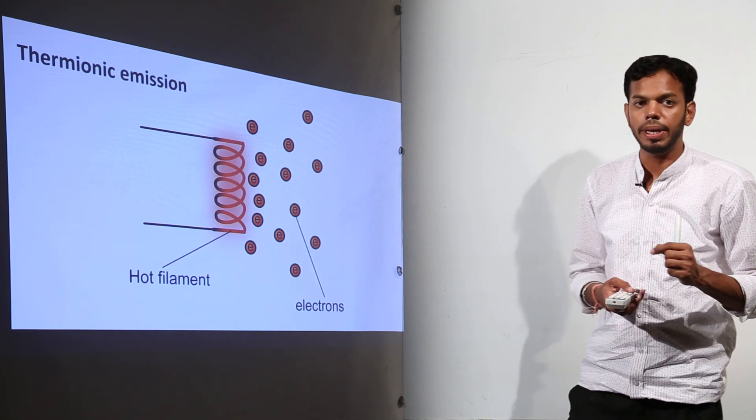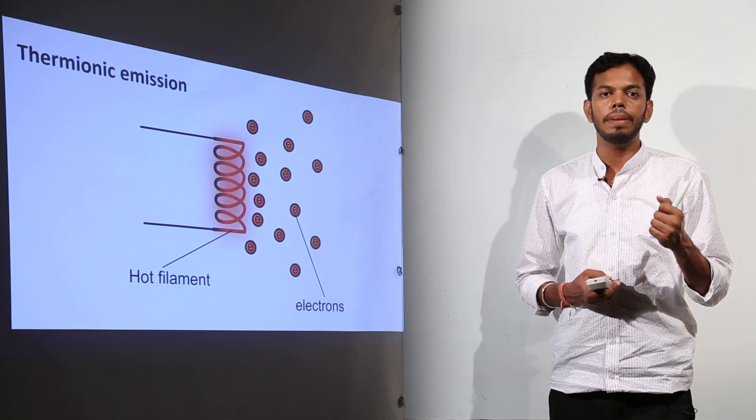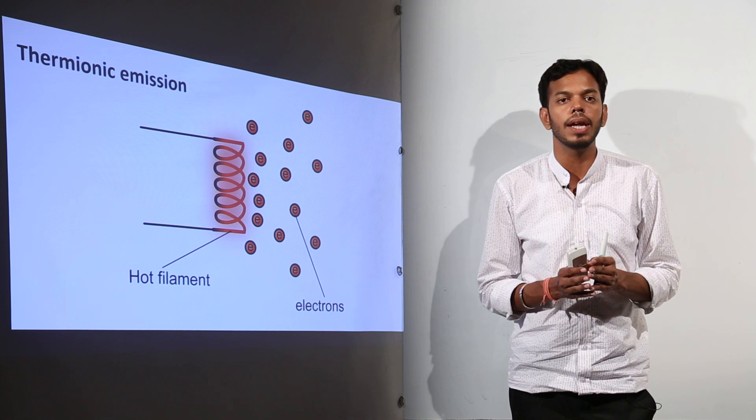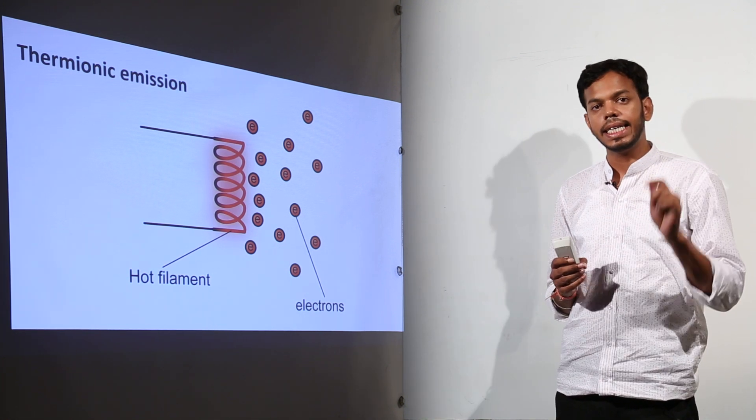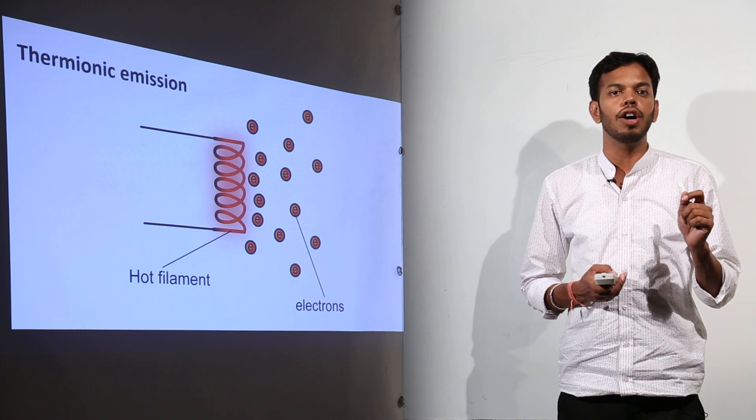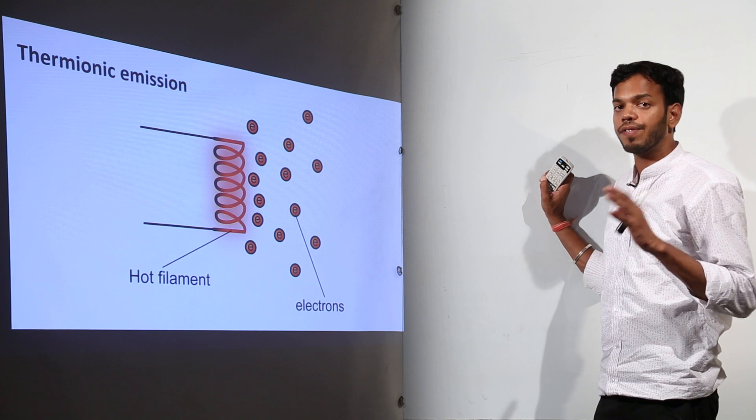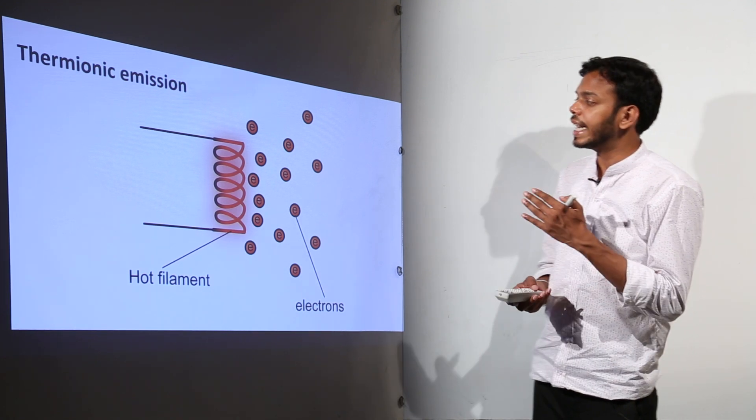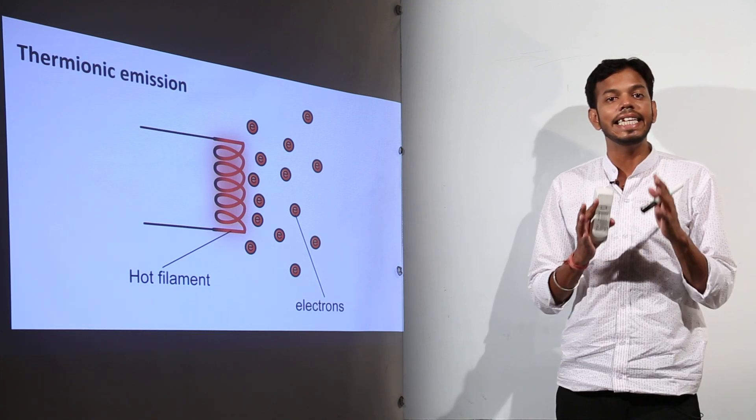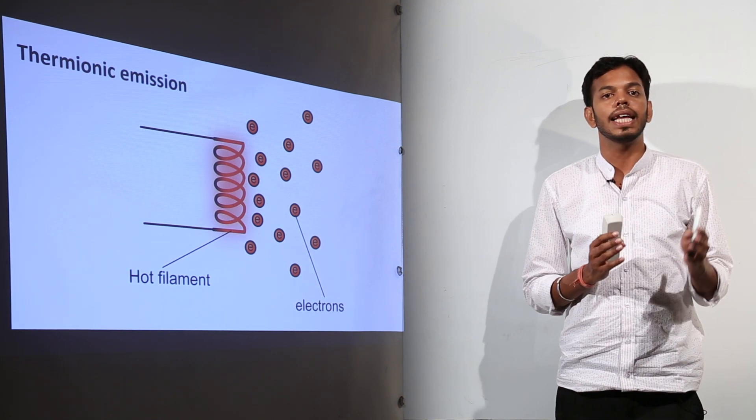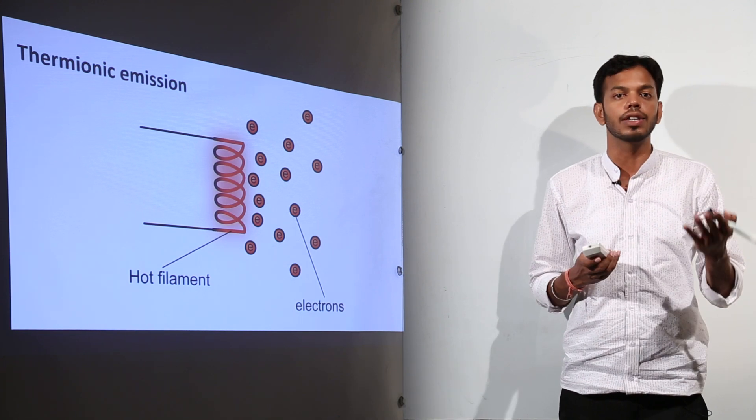Now, this phenomenon was first observed by scientist Edison, but the phenomenon was left unexplained. It was left unexplained till the discovery of electrons by J.J. Thomson. So before that, even if Edison found out that the electrons are getting liberated from the metal surface when it is getting heated up, he didn't know at that time that the particles which are coming out are called electrons.